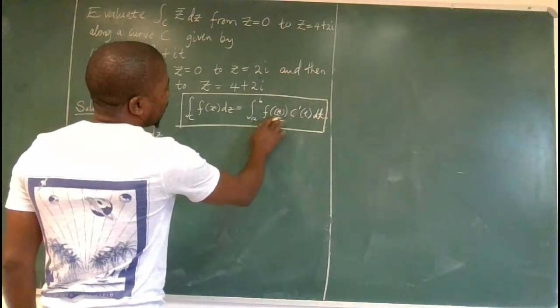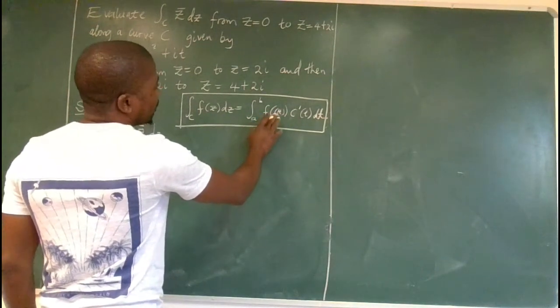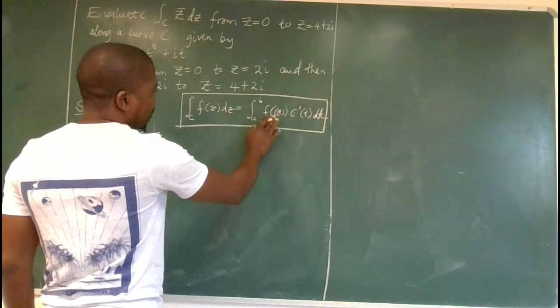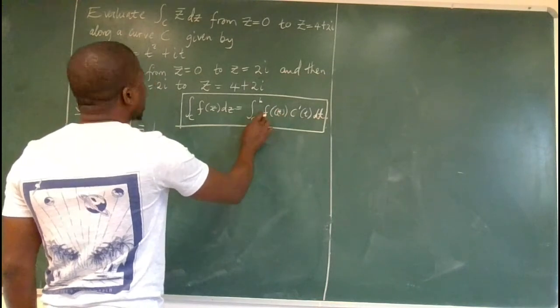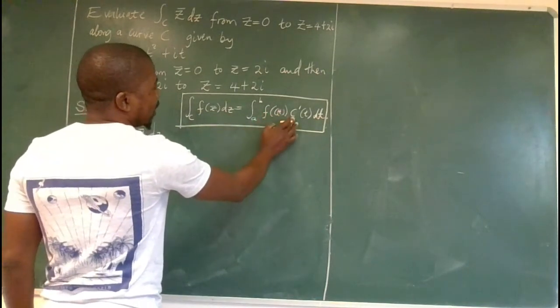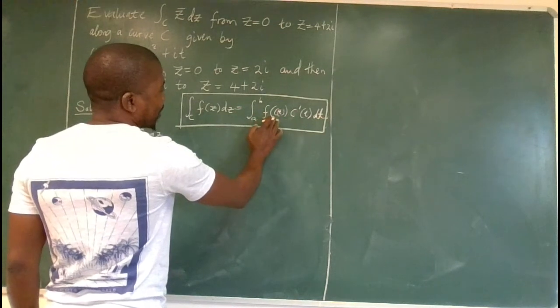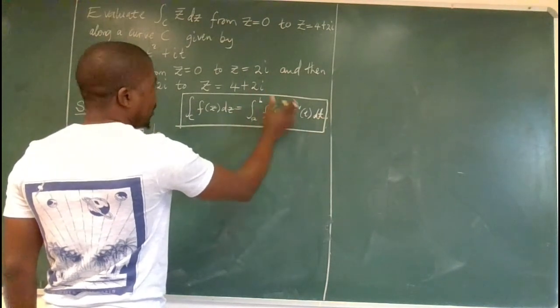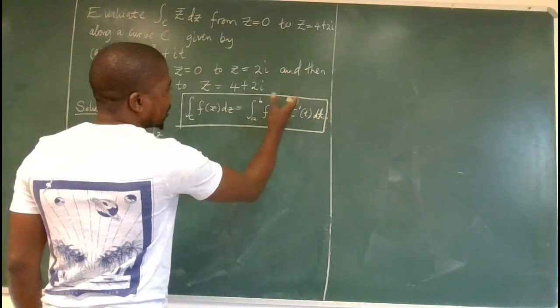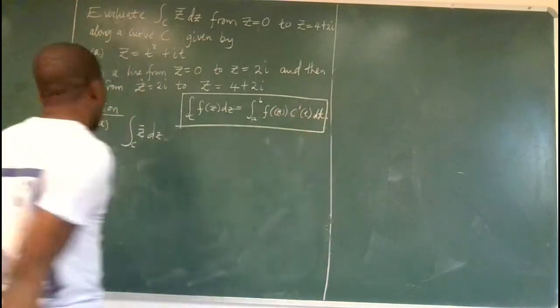And here we have, we substitute the parameterized function into the original function, and then we place it here, and then we take this derivative of the parameterized function, then t there.